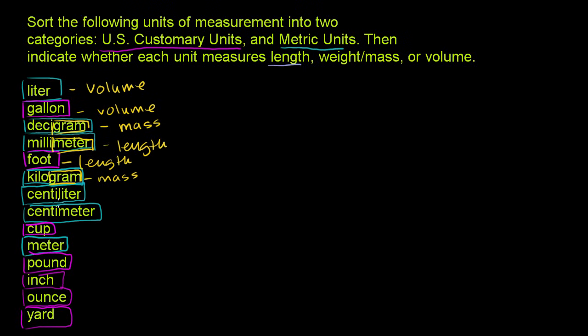Centiliter, that means one hundredth of a liter. Liter, we already figured out, is a unit of volume. Centimeter, we already figured out. Meter is a unit of length. Centimeter means one hundredth of a meter. So this is a unit of length. Cup, we've seen multiple times already. It is a unit of volume. How much space does something take up? Meter, that is length. We've seen it multiple times already.